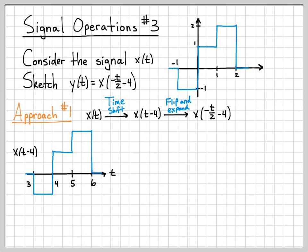Now what do I need to do? That's x(t-4). I need to flip and expand. When I flip it, 3 turns into -3, 4 turns into -4, 6 turns into -6. But then I multiply by 2 because it's an expansion.